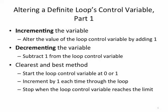We want to make sure that we alter the loop control variable inside the loop with a definite loop. This is a count-controlled loop. There are two ways we can alter it: we can add one or some fixed value, or we can subtract one or subtract a fixed value. We call this incrementing (that's adding) or decrementing (that's subtracting). The clearest and best method is to start the loop control variable at 0 or 1 and add 1 each time through the loop, stopping when the loop control variable reaches a certain limit.